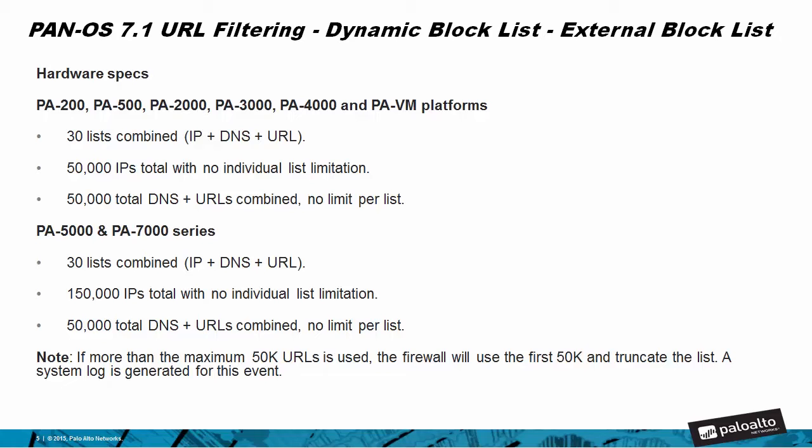On the PA-5000 and 7000 series, there is the same limitation of 30 lists, but you have 150,000 IPs total with no individual list limitation, and 50,000 total DNS and URLs combined with no limit per list. If more than 50,000 URLs is used, the firewall will use the first 50,000 and truncate the list; a system log is generated if this happens.